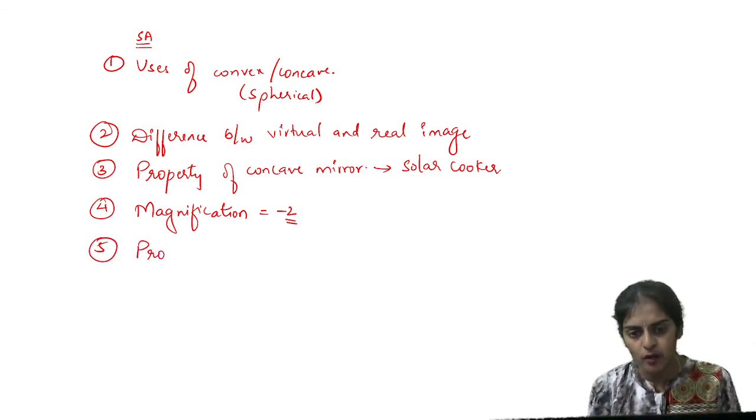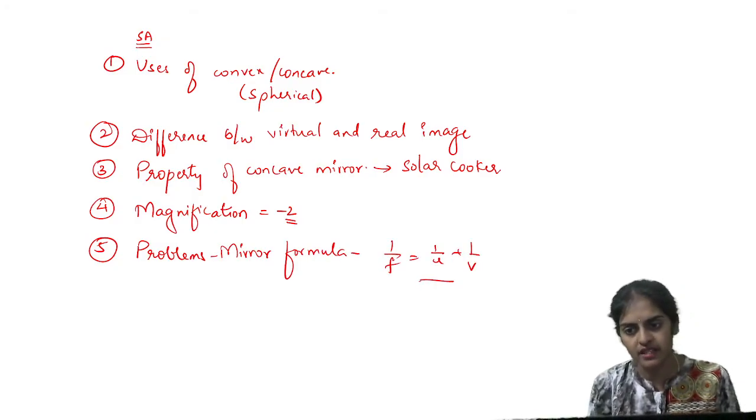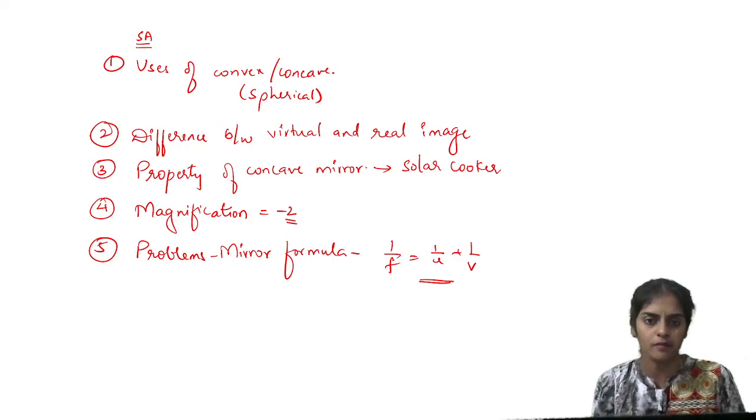Then you may get problems on mirror formula. Mirror formula definition is 1 by F equal to 1 by U plus 1 by V. This is the mirror formula. The mirror has a chance.